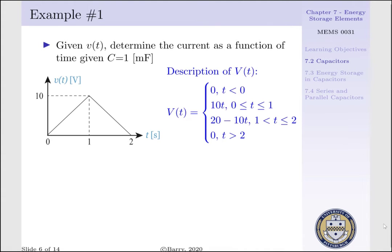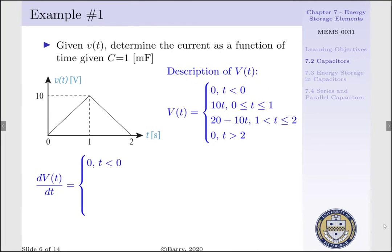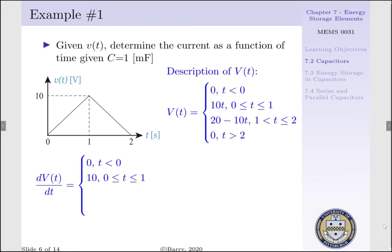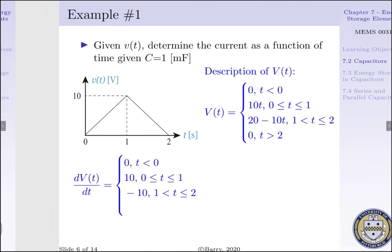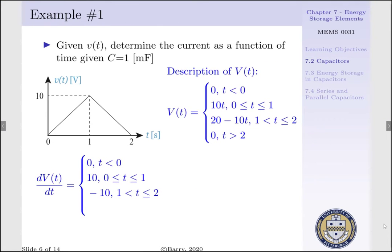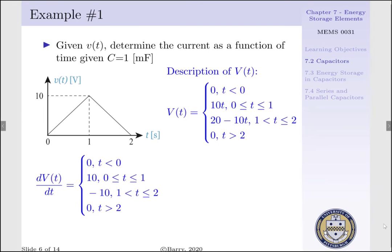Now to determine our current running through the capacitor, we need to differentiate our voltage with respect to time. The derivative of 0 with respect to time is 0, the derivative of 10t with respect to t is 10, the derivative of 20 minus 10t is minus 10, and the derivative of 0 with respect to t is 0.